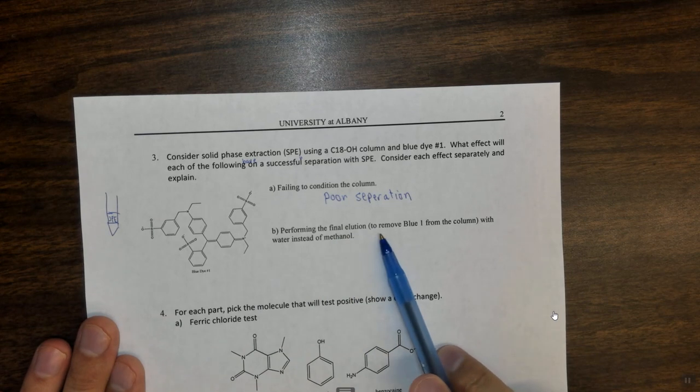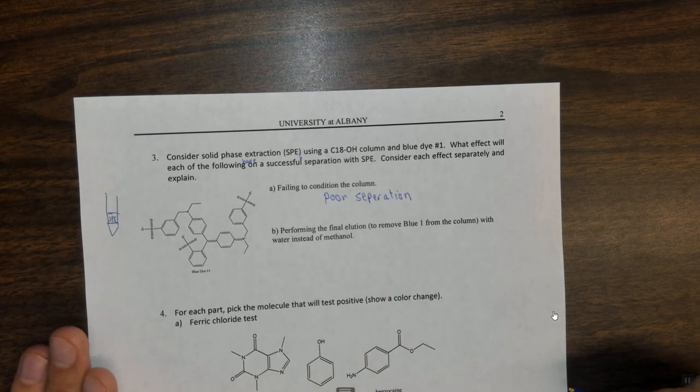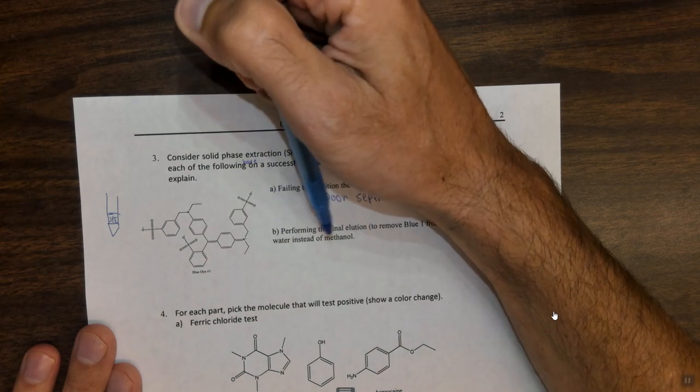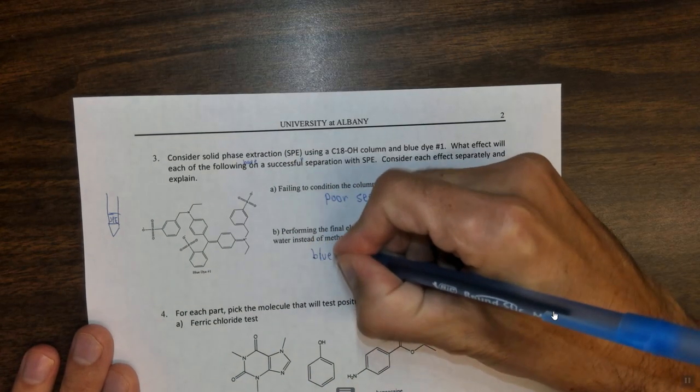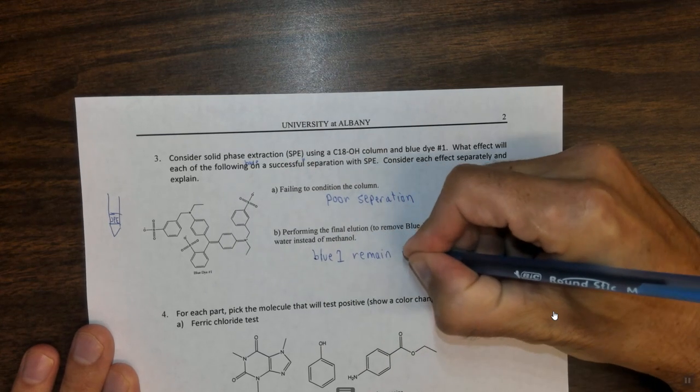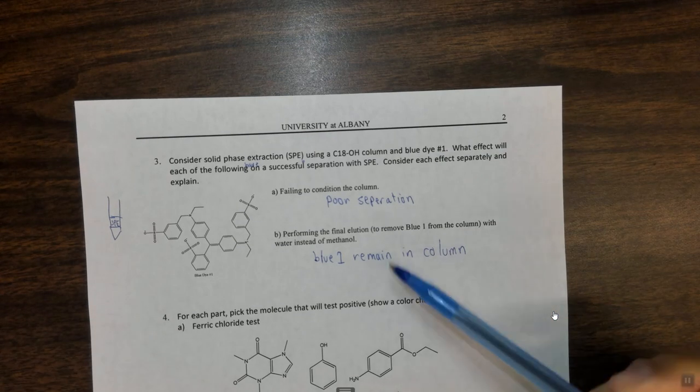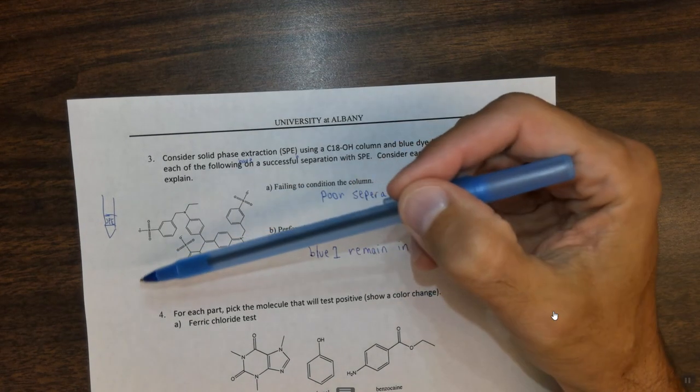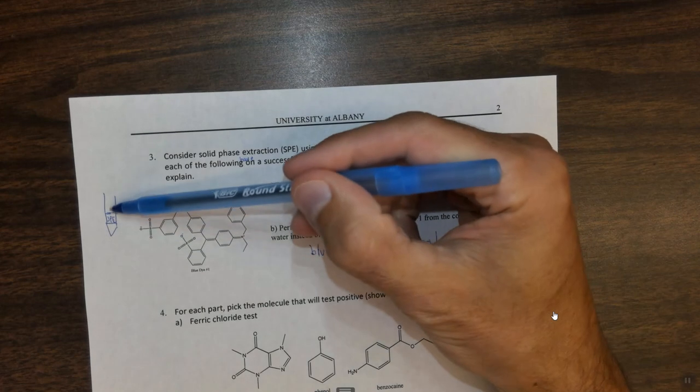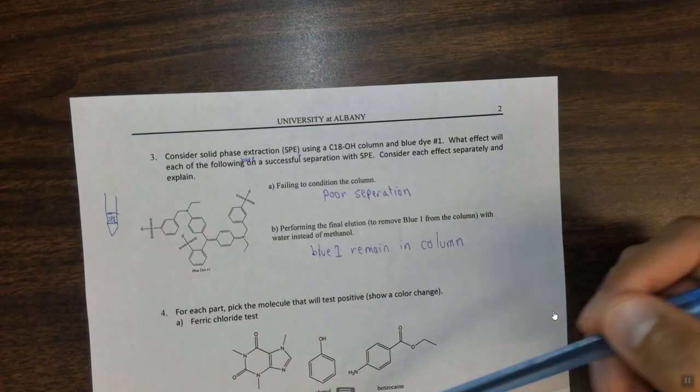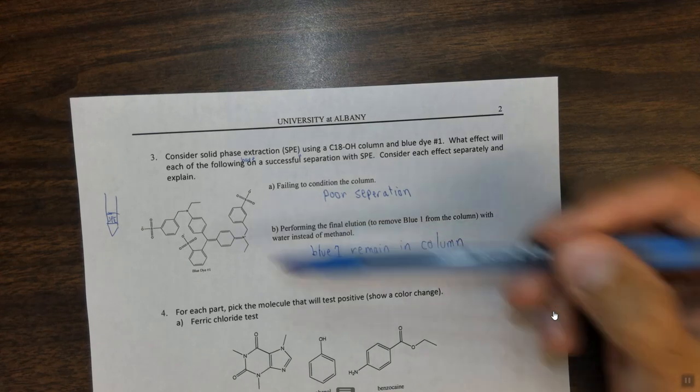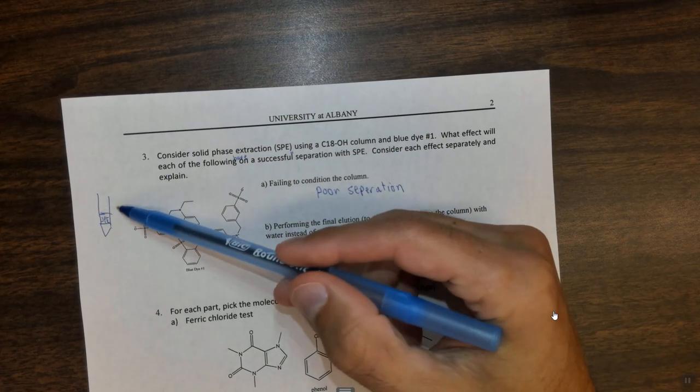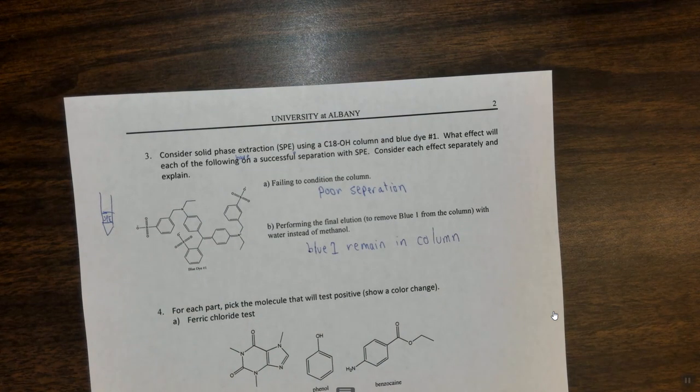Performing the final elution to remove blue one from the column with water instead of methanol. Well in this case if we condition the column properly and we trapped our blue dye up in the top of our SPE column, if we elude it with water the blue dye will not come out. So blue one will remain in the column because the water is too polar and basically it is going to stay interacting with that C18OH and the water is not going to be able to pull it out. In fact you actually washed the column with water and that blue line stayed right here. When you add a more organic solvent, methanol, although it's polar it's not as polar as water, this tends to release the interaction between the C18 with the nonpolar parts of this molecule and specifically methanol will wash the blue food coloring out of the column.